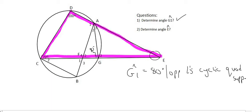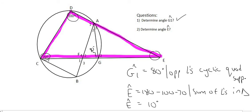well, we already know that D is 100, this one over here is 70, and so we could say that angle E is going to be equal to 180 minus 100 minus 70. Why? Because of the sum of angles in a triangle. And so if you work that out, you're going to end up with E as 10 degrees.